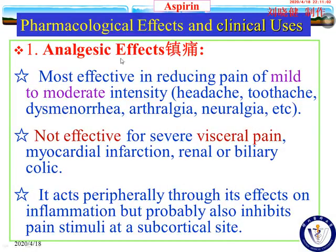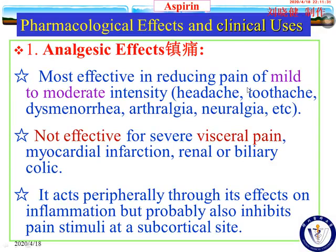The first effect is analgesic effects. Aspirin is most effective in reducing mild to moderate intensity pain, such as headache, toothache, dysmenorrhea, arthralgia, and even neuralgia. We can use aspirin to treat this mild to moderate intensity pain. But it is not effective for severe visceral pain — myocardial infarction, renal or biliary colic. It is not effective.